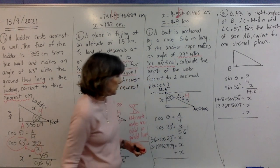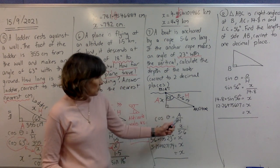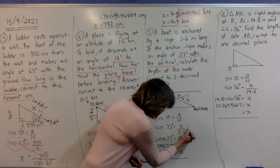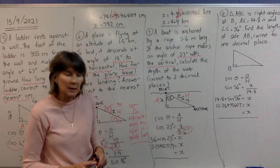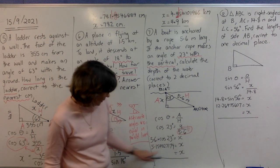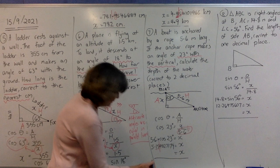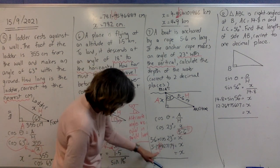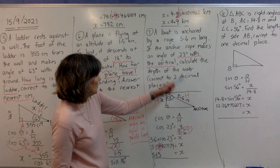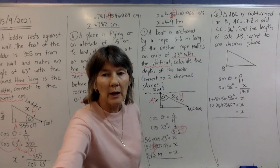The rope is the hypotenuse, and the depth (x) is adjacent to the 23-degree angle. Using adjacent and hypotenuse, we use cosine: cos θ = A/H, so cos 23° = x/5.6. Rearranging: multiply both sides by 5.6, so x = 5.6 × cos 23°. Calculate, round to two decimal places — the next digit is less than five so it stays — giving 5.15 meters.